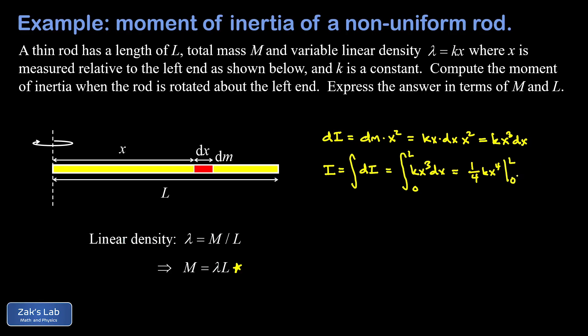Now when I sub in the lower limit, I get zero. So I don't care about that one. When I sub in the upper limit, I end up with a one fourth kL to the fourth.